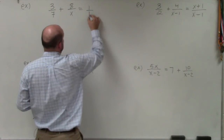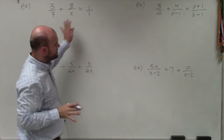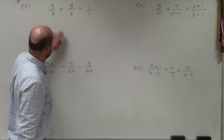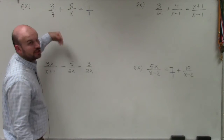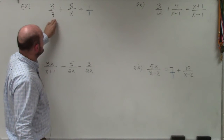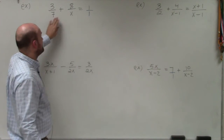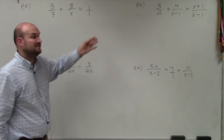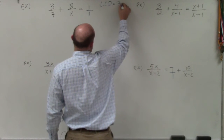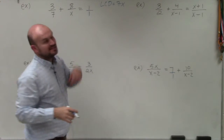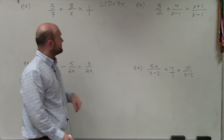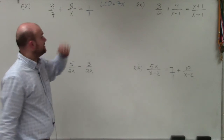In this example, you want to make sure that each one of your expressions is written as a fraction. Then you look at them and say, what is the smallest term or expression that 7 and x evenly divide into? Well, in this case, my LCD is going to equal 7x, because 7 divides into 7x seven times, and x divides into 7x seven times. And obviously, 1 divides in there as well.